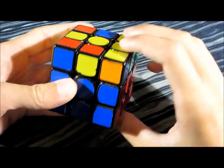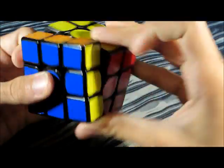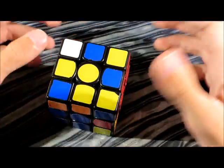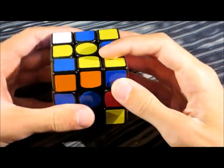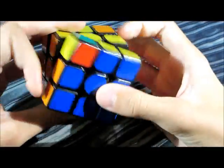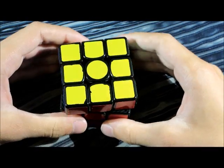The next method is one look last layer. So this obviously is really fast where you only have to do one algorithm for the last layer. And the last method we're going to be going over is ZB. So you have your F2L slot and what you do is you insert your last two pieces whilst orienting all your edges. And then you solve the rest of the cube in one algorithm.